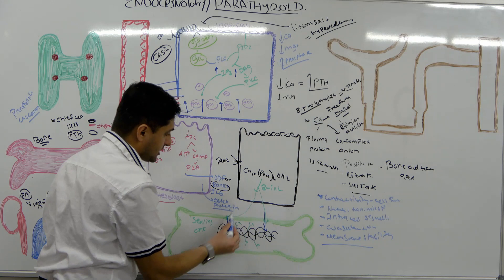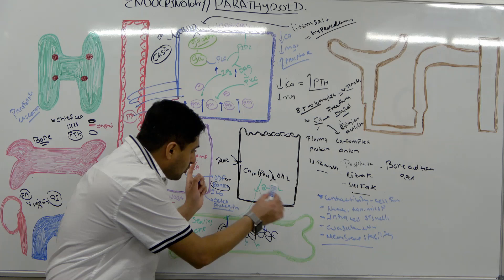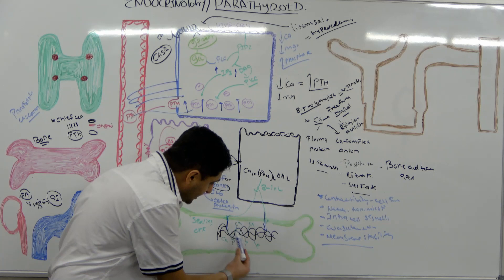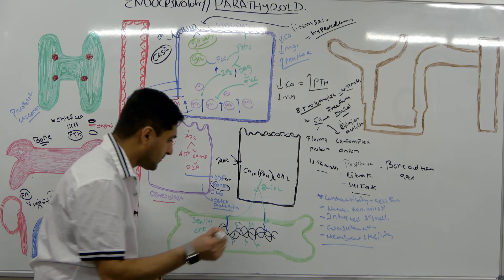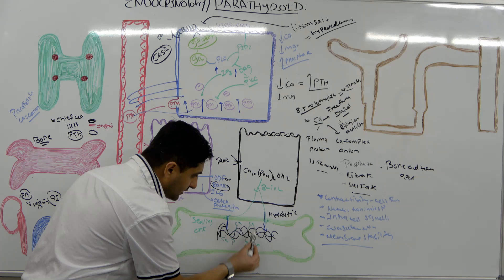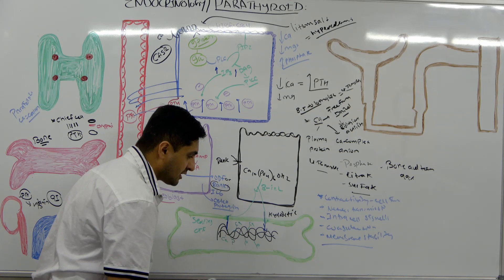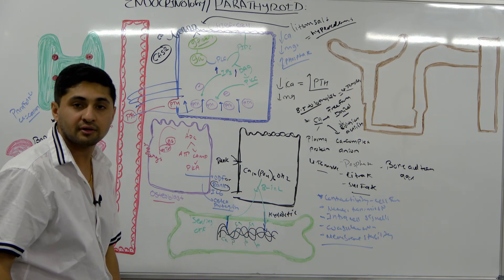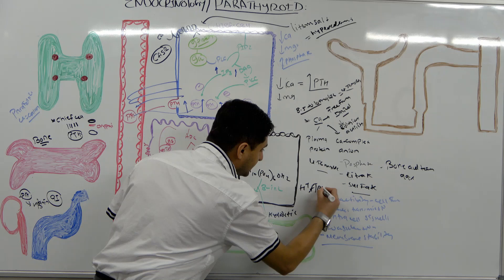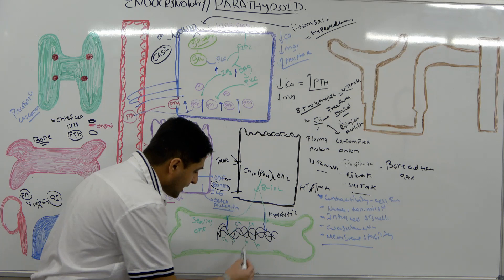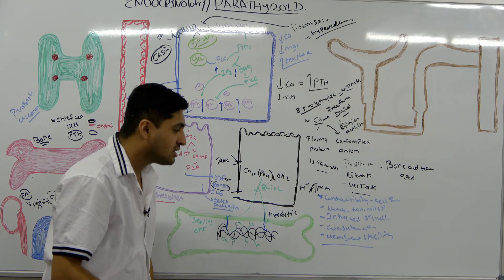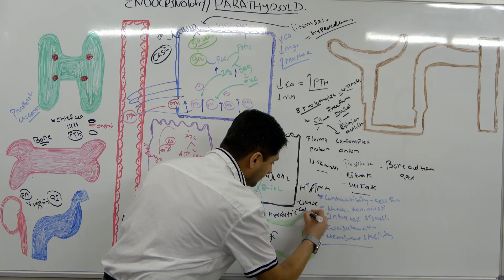After the sealing off by beta-integrins, the osteoclast's lysosomes start fusing at the sealed site and begin releasing hydrolytic enzymes. Not only that, the cell increases the activity of its proton ATPase pump, making the local environment very acidic. In this acidic environment, proteins like collagenase and cathepsin are released to break down the bone matrix.